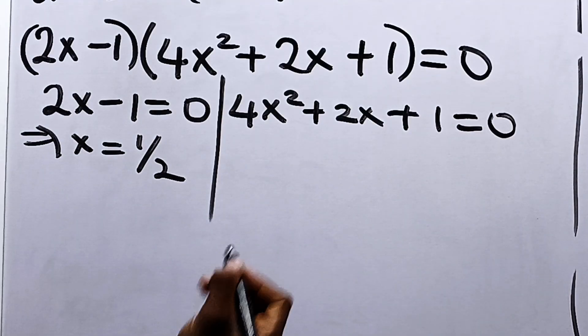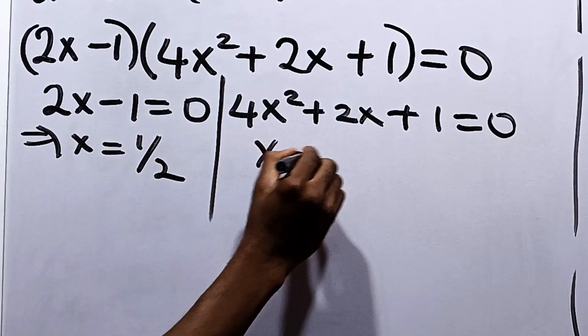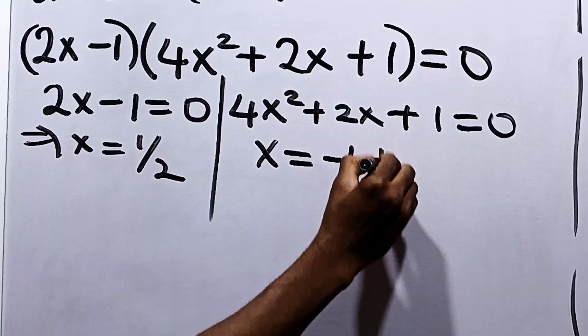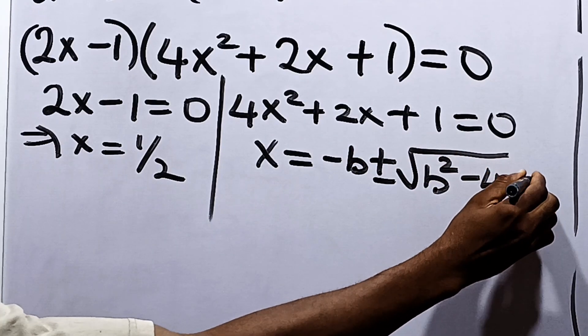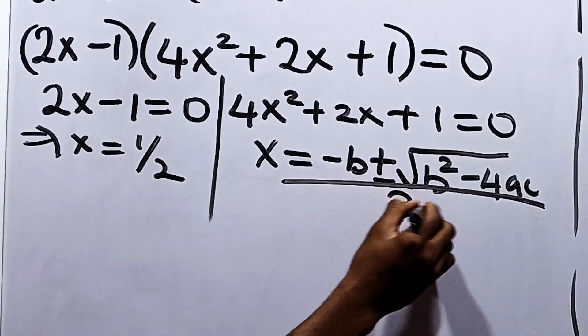Or, we have 4x squared plus 2x plus 1 is equal to 0. Now, you can say from here, using the quadratic formula, that our x here will be equal to minus b plus or minus square root of b squared minus 4ac all over 2a.